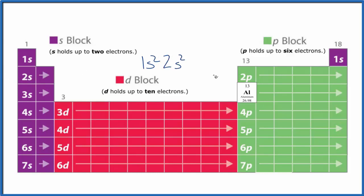And we continue across, and here we are at 2p: 1, 2, 3, 4, 5, 6. The 2p orbital holds 6 electrons.